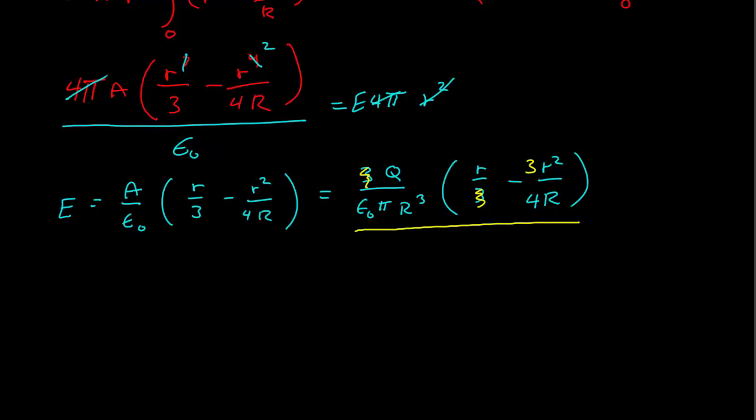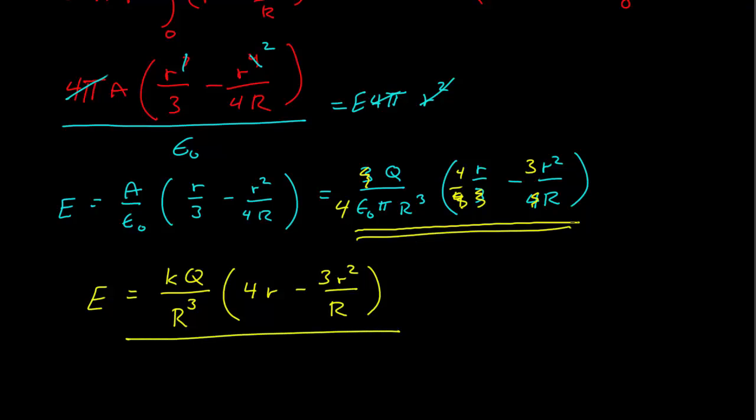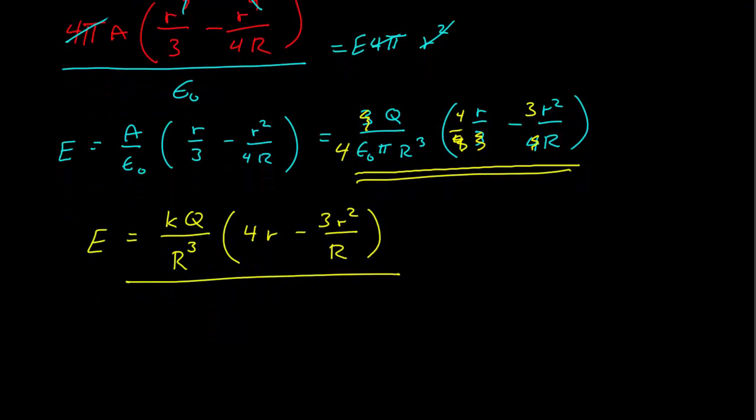I could also then, I've got a 4 pi epsilon naught here, so if I multiply that by 4 over 4, then I could pull out a 4 here, and then I have a 4 pi epsilon naught I could turn into a K, so if I wanted to look at it, I could say it was also KQ over the radius cubed, and now I have 4 times R minus 3R squared over R. I don't know if this is better than looking at it this way, but we can see it depending on how you want to calculate it.